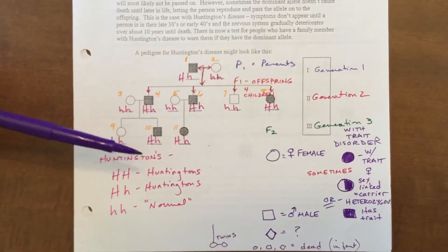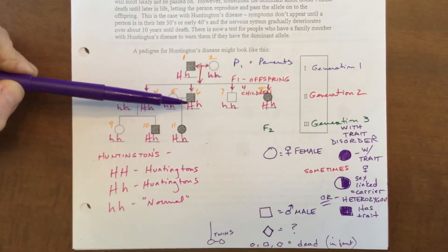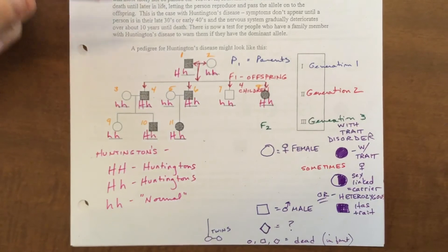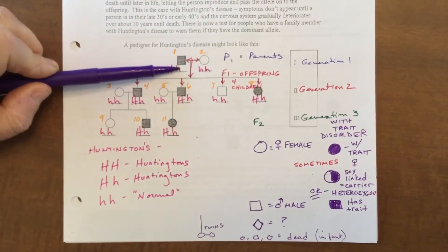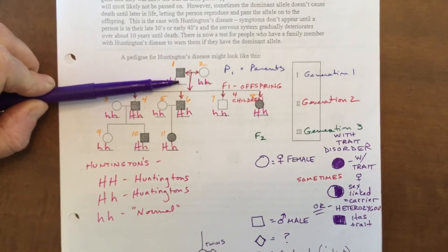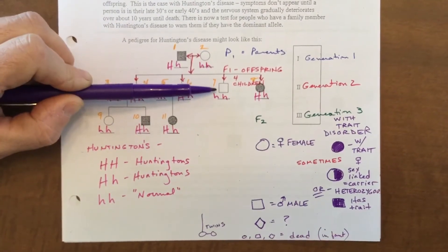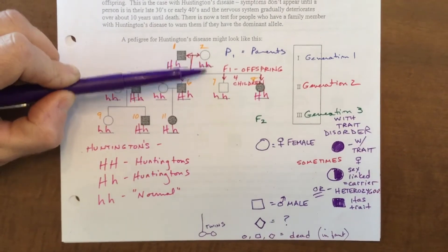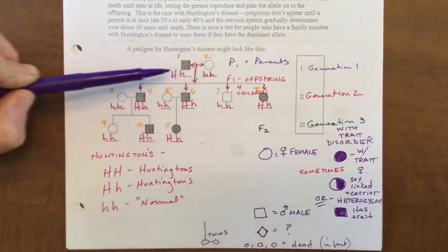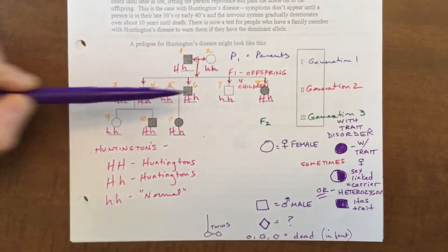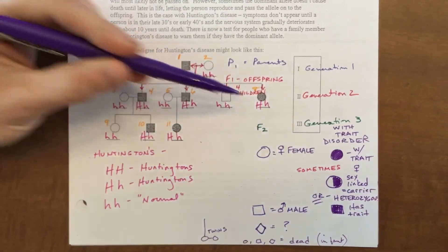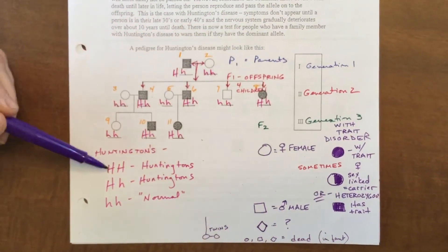Then go back and look at all shaded individuals — they're either big H big H or big H little h. Use Punnett squares on scrap paper if needed. For example: mom is normal, little h little h; dad is shaded. Looking at their offspring, there's a normal son — so one little h comes from mom and one little h has to come from dad, meaning dad must be big H little h. Then do a Punnett square to work out what all the children look like.